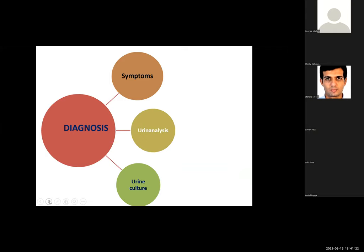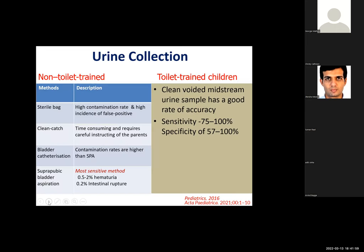Diagnosis of UTI requires a careful history and examination, followed by urine analysis, with confirmation based on urine culture. Without urine culture, it is difficult to definitively label someone as having urinary tract infection. Proper sterile urine collection is critical, especially in non-toilet-trained children, to avoid contamination and incorrect labeling. There are four methods of collection: suprapubic aspiration, bladder catheterization, clean catch midstream, and plastic bag collection.